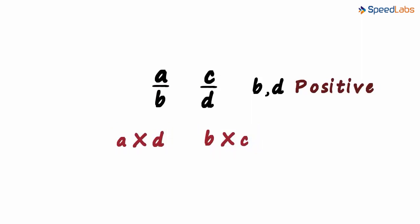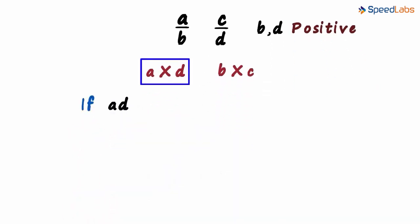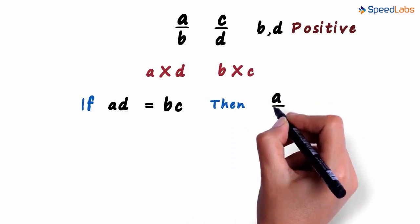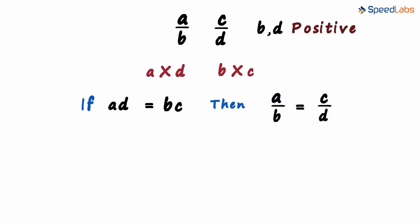There are three simple things we need to understand here. If AD, which is the product of A and D, is equal to BC, the product of B and C, then A by B will also be equal to C by D. If the product of these two integers is equal to the product of these two integers, then the two rational numbers will be equal.